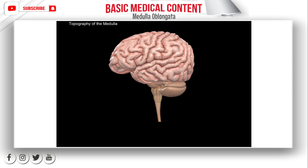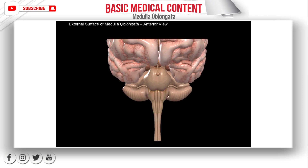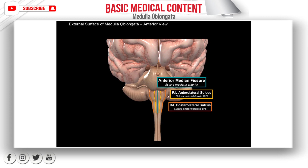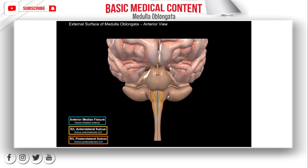Externally, your medulla has two surfaces: an anterior surface and a posterior surface. Starting with the anterior surface — if you look at the brainstem from this perspective, the medulla oblongata is here in green. There are five grooves on the anterior surface. The first is the anterior median fissure. Laterally to that, you can see the right and left anterior lateral sulci. And laterally to that again, the right and left posterior lateral sulci. Between these grooves, there are bumps characteristic for the medulla. The first bumps are called the pyramids of the medulla oblongata, located medially between the anterior median fissure and the anterior lateral sulci.